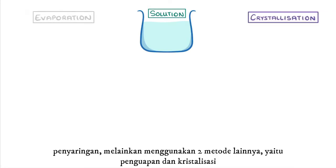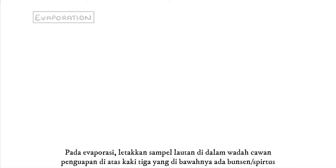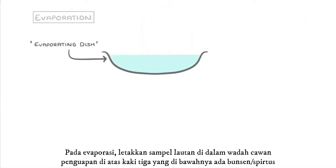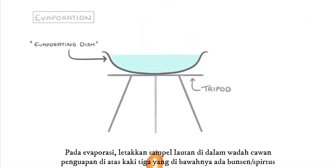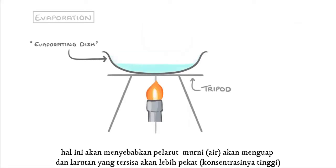For evaporation, we place our solution in an evaporating dish, or a crucible, which we normally place on a tripod, and then slowly heat it with a Bunsen burner. This will cause the solvent to start evaporating, and the remaining solution to get more concentrated.